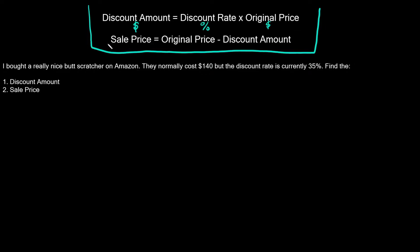The second formula says that the sale price is equal to the original price minus the discount amount. The sale price is how much you actually pay for the discounted item, in dollars. It's equal to the original price in dollars minus the discount amount, also in dollars.